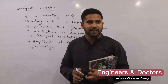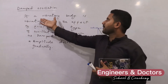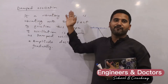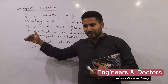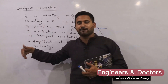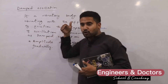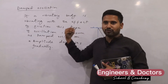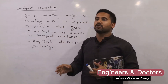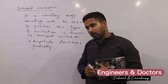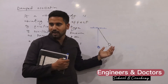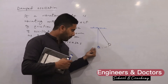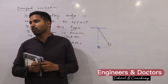If a vibratory body vibrates with a friction effect, then its amplitude will be reduced. The oscillation decreases — this is called damped oscillation. In damped oscillation, the amplitude of any vibratory body keeps getting smaller and smaller on each side.